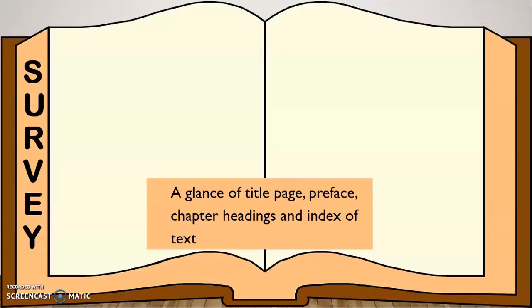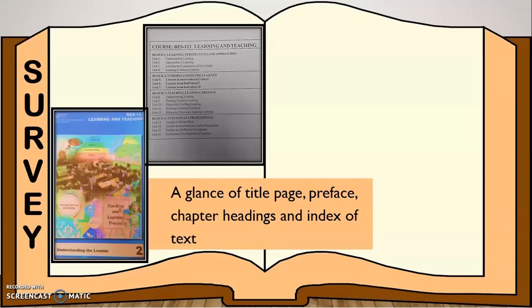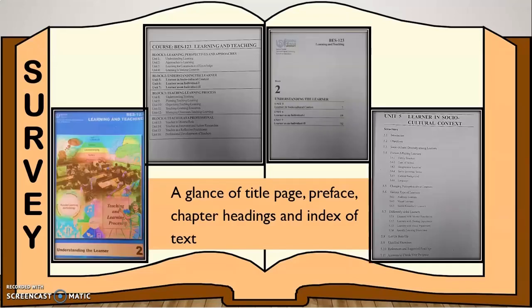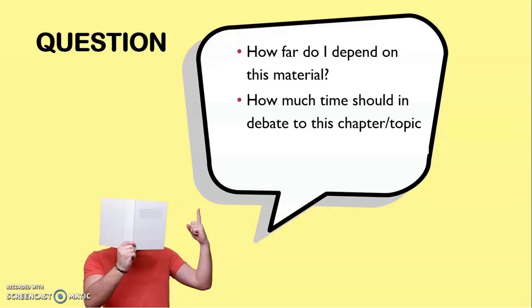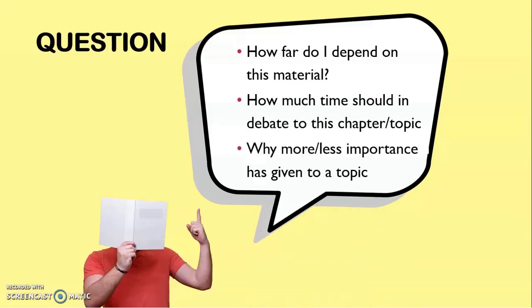Survey means to have a glance at the title page, the preface, the chapter headings, and the index of the text. Then comes Question — how far do I depend on this material? This is a question every ODL learner asks. How much time should you devote to a chapter or topic, and why should more or less importance be given to a particular section?